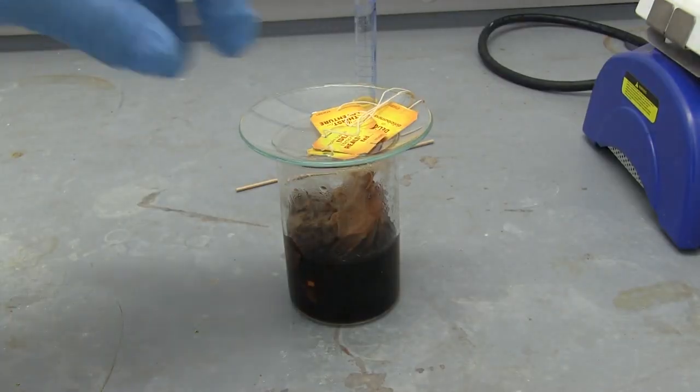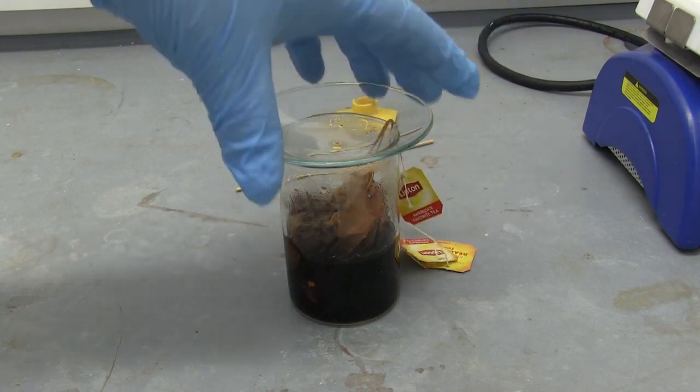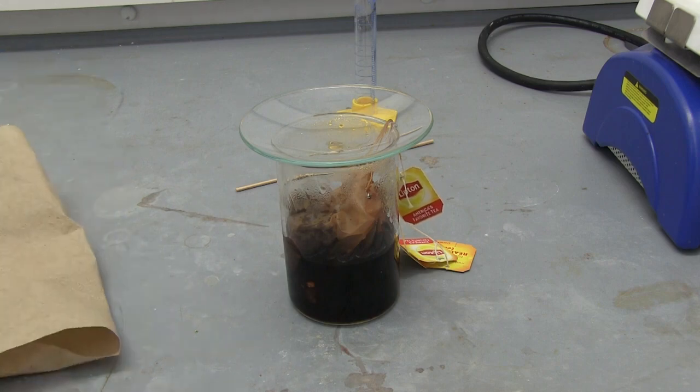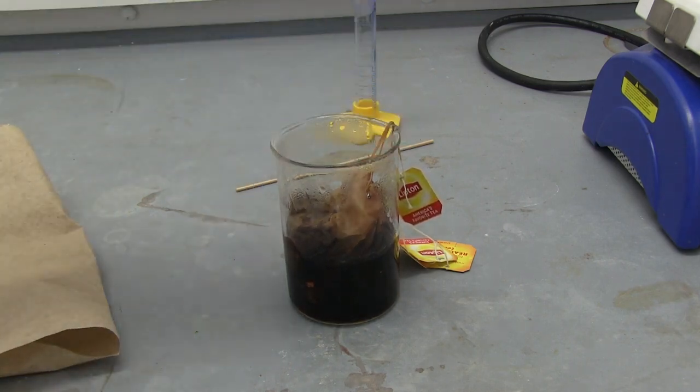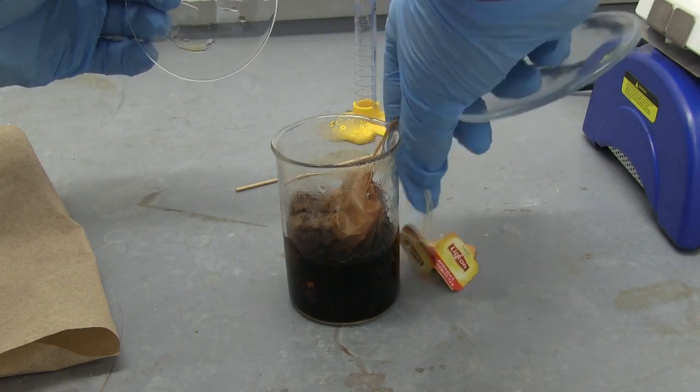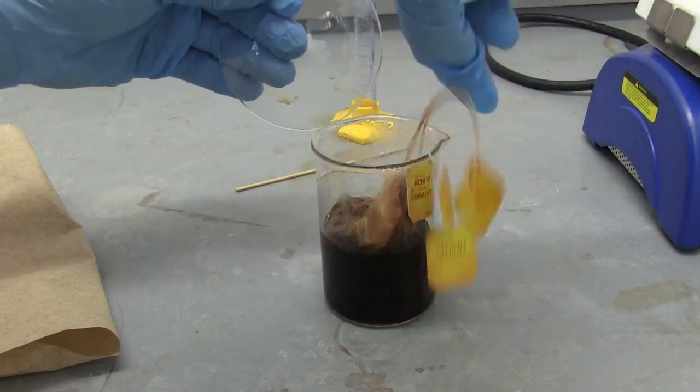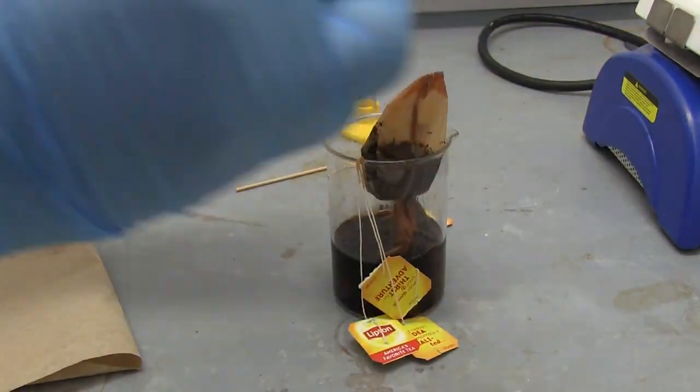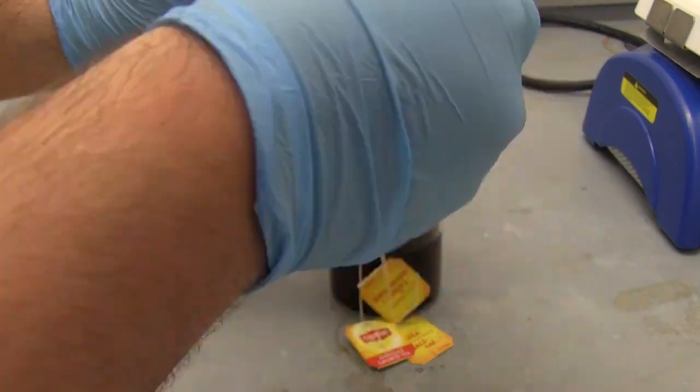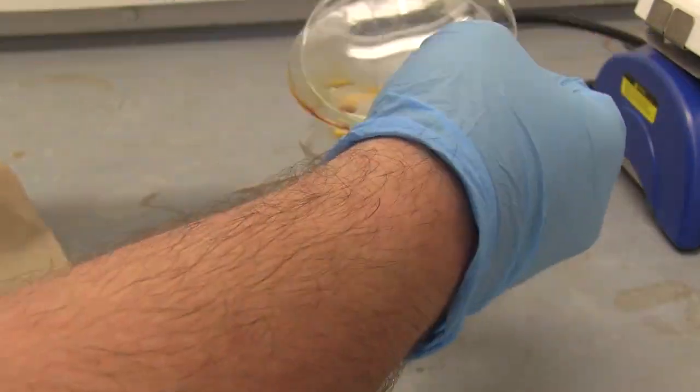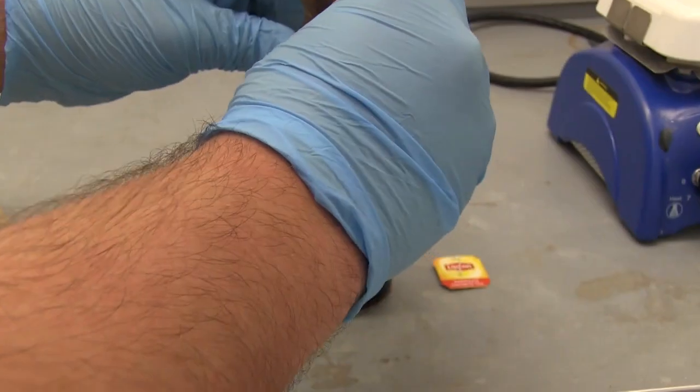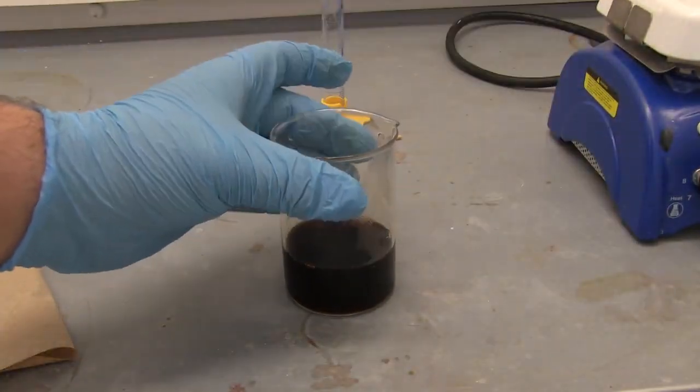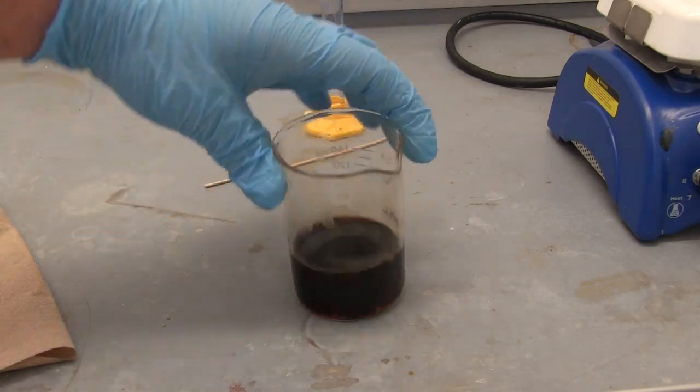Alright so now we have our tea. We're going to squeeze out our tea bags. I got some paper towels off the side and two watch glasses that we're going to squeeze the tea bags in between, probably just do one at a time. It's still really hot so I want to be careful. Now we're going to let this cool down to room temperature and I'll begin extracting it.